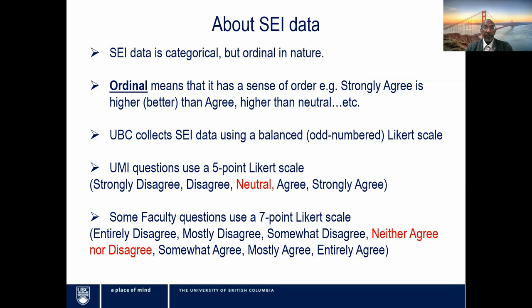The type of data that we collect in the Student Experience of Instruction surveys is categorical in nature. Student responses are captured in categories ranging from strongly agree to strongly disagree, but these categories have some sense of order, so the data is actually ordinal — we think of strongly agree as being higher or better than agree, which is higher than neutral. The university module item questions — the six UMIs — and most faculty and department questions use a five-point scale, but there are some faculty questions that use a seven-point scale.